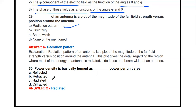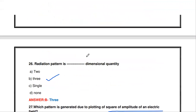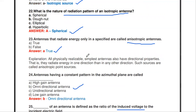The next question: power density is basically termed as dash power per unit area. Options are reflected, refracted, radiated, or diffracted power per unit area. The answer is radiated power per unit area — that is called power density. These are some of the basic questions about antenna and microwave.